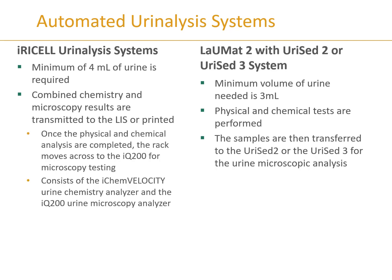The Iris cell analyzer combines chemistry and microscopy, with results printed or transmitted via LIS. It processes in two parts: after physical and chemical analysis is completed, the sample moves to the microscopy testing stage. This effectively combines the process of two analyzers into one.